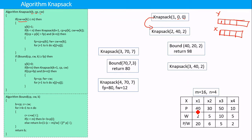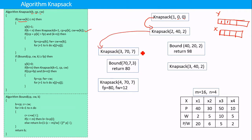We add the weight of the second item to the current weight. The current weight is 2 and the weight of the second item is 5, so 2 plus 5 equals 7, which is less than m. So we set y[k] = 1 for the second item. From there, we call knapsack(3, 70, 7), adding the profit and weight of the second item to the current profit and current weight.